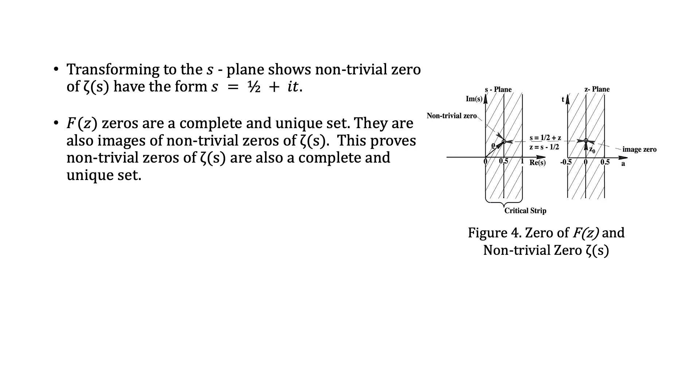F(z) zeros are a complete and unique set. They are also images of non-trivial zeros of ζ(s). This proves non-trivial zeros of ζ(s) are also a complete and unique set. These results together prove Riemann's hypothesis is true.